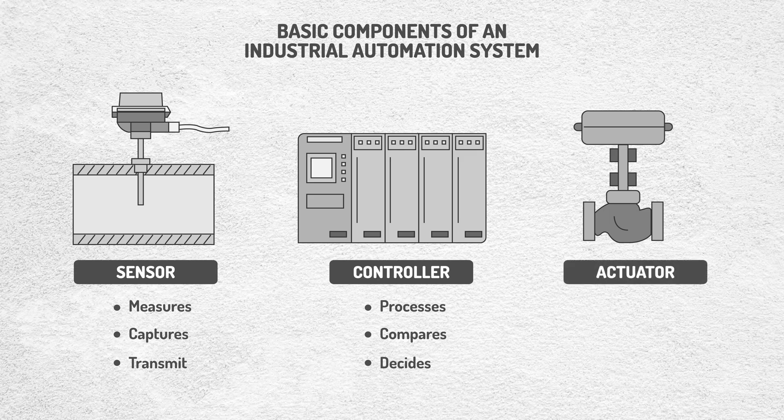Actuators: these convert control signals into physical actions, such as moving a robotic arm, opening or closing a valve, turning on a pump, or turning off a motor. These three components can work together to make the process operate properly.